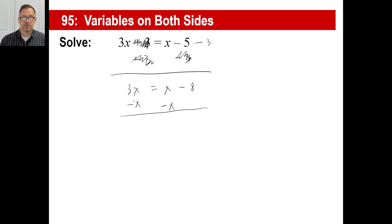So now we have 3x minus 1x is 2x. x minus x gone. Now we have the right side is negative 8. So we just divide by 2 and negative 8 divided by 2 is negative 4. And there we go.